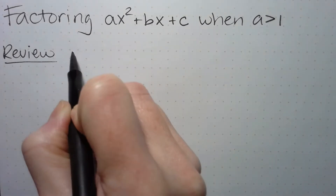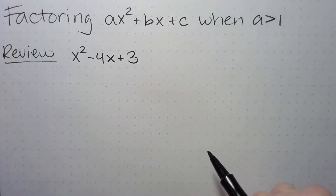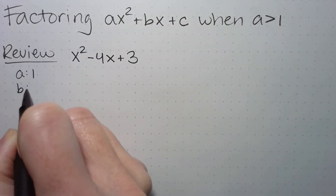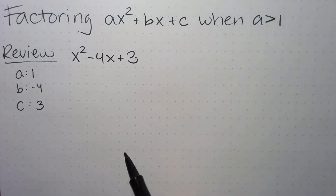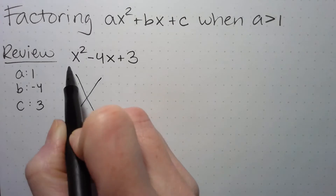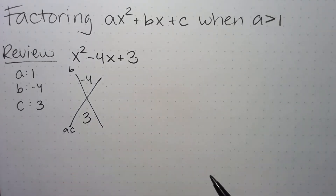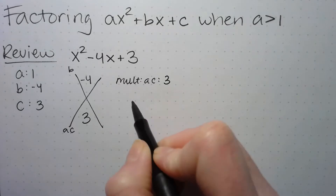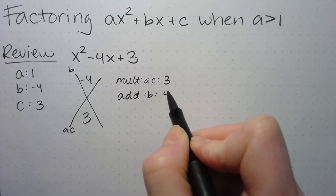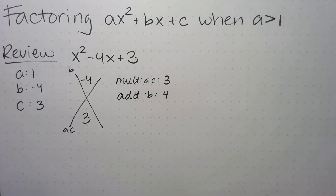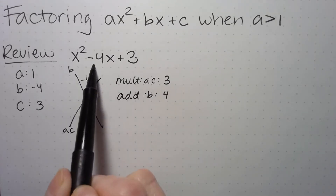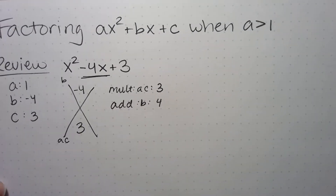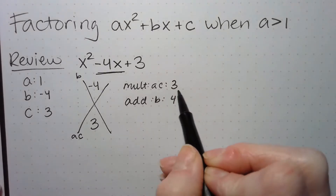So a little review: x squared minus 4x plus 3. Let's identify our a, our b, and our c, and we're going to make our puzzle, where b is up top and ac is down below. We need to figure out two numbers that multiply to make ac, which is 3, and add to make b, which is negative 4.